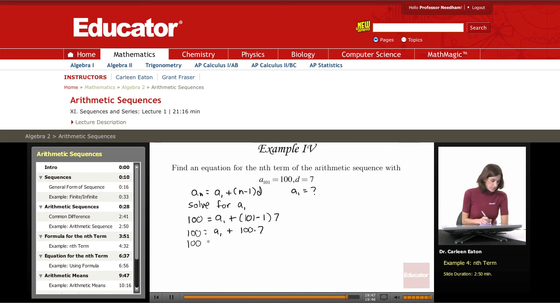100 equals a sub 1 plus 700. Subtract 700 from both sides. That's going to give me negative 600 equals this first term. So just rewriting it in a more standard form, the first term equals negative 600.